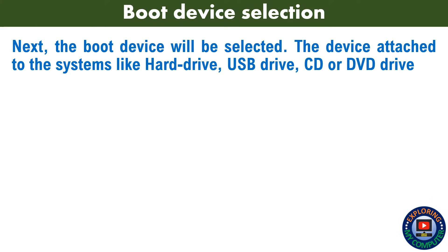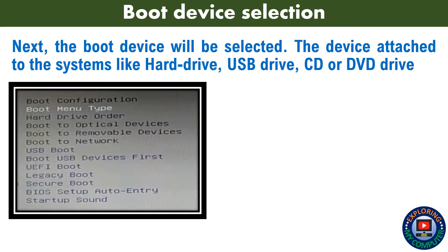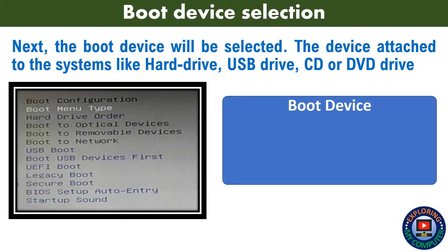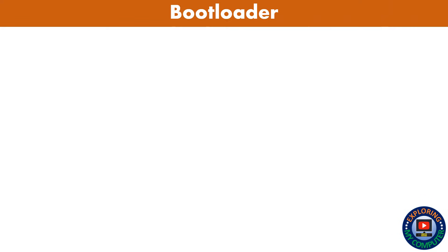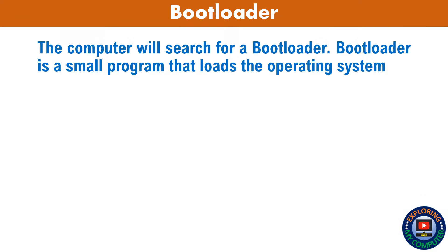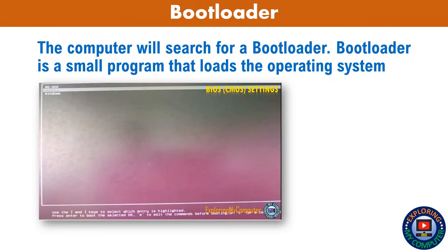Next, the boot device will be selected. The device attached to the system — like a hard drive, USB drive, or CD or DVD drive — will be used. The computer will then search for a bootloader. A bootloader is a small program that loads the operating system.